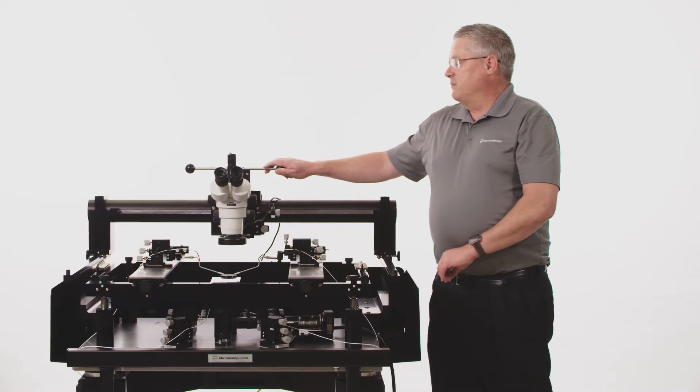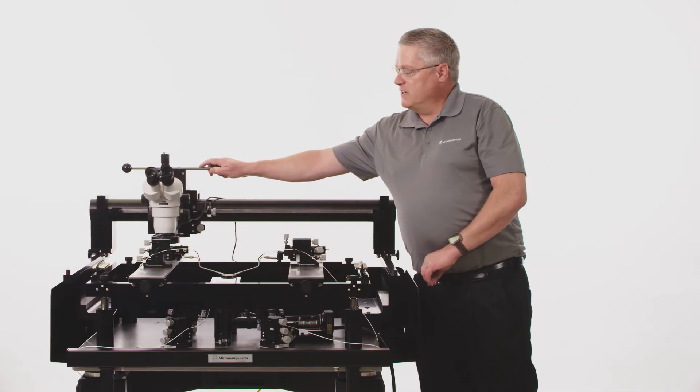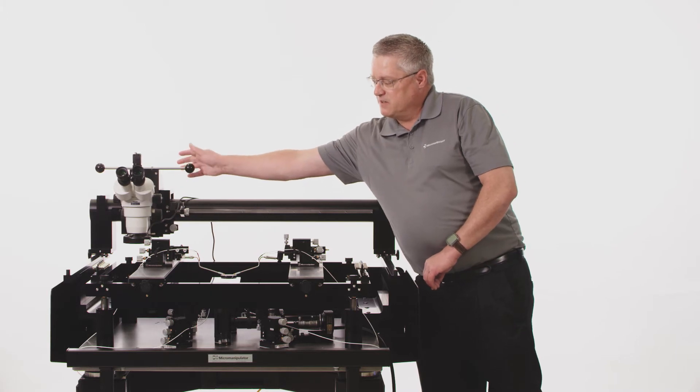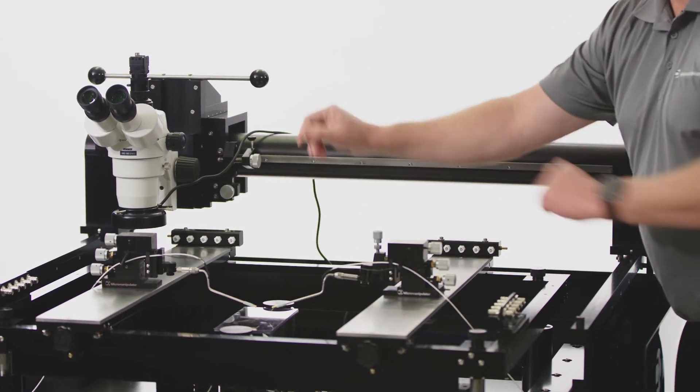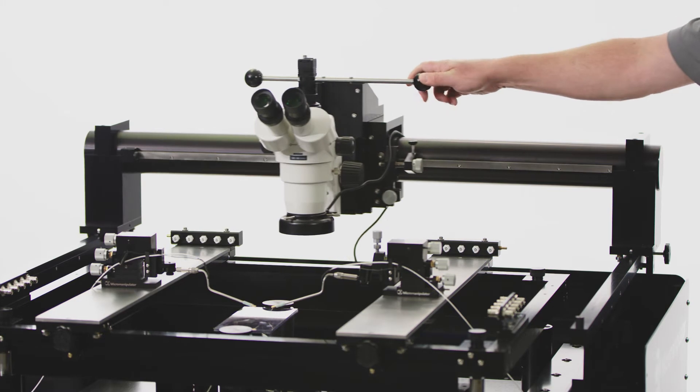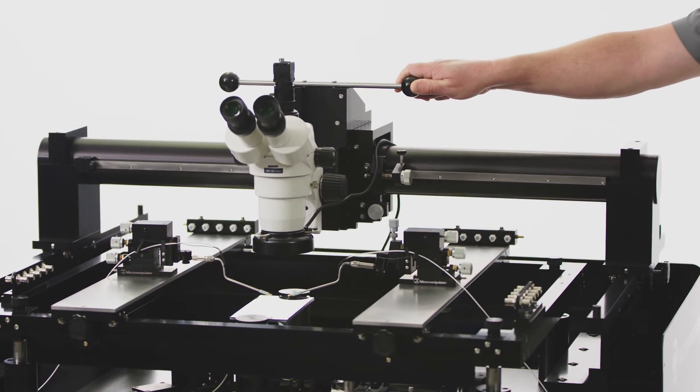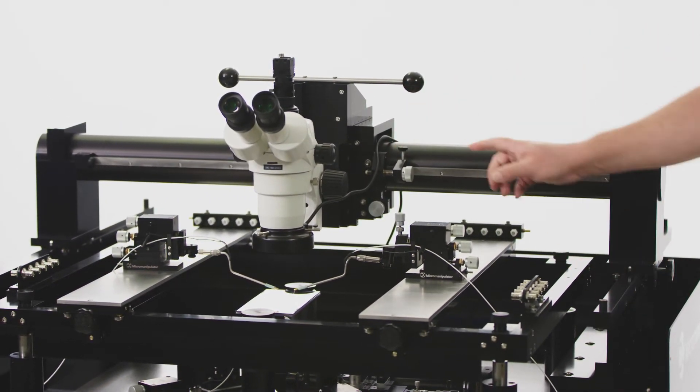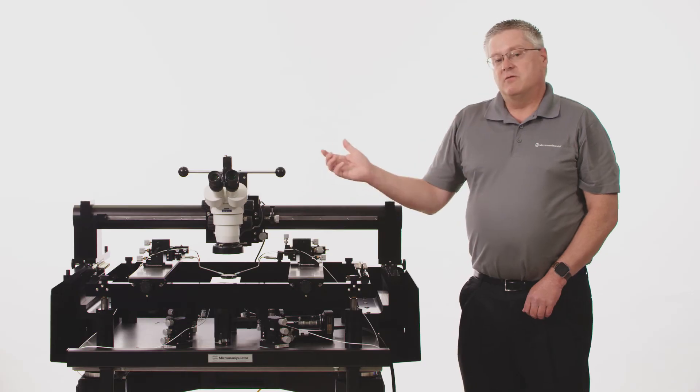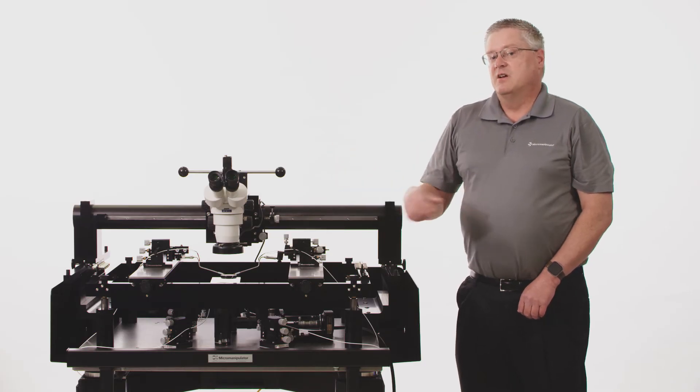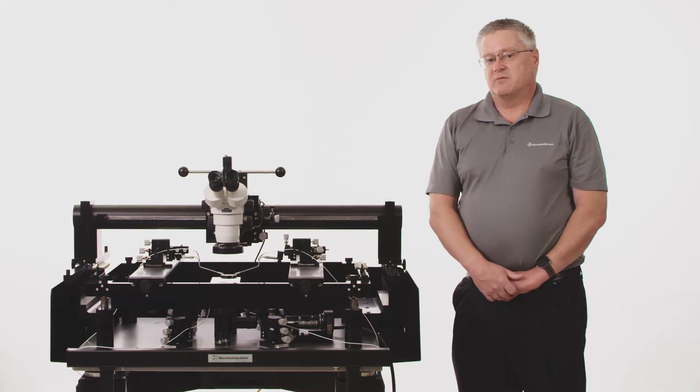It does that by introducing a new approach to microscope motion. The Versa microscope can be completely moved out of the way 26 inches by 26 inches of motion so that you can set up your system. When you're done setting up, move it back into place, lock it down, and then you have fine controls just like you would have on a regular wafer probe station for your focusing and for your fine XY motion.